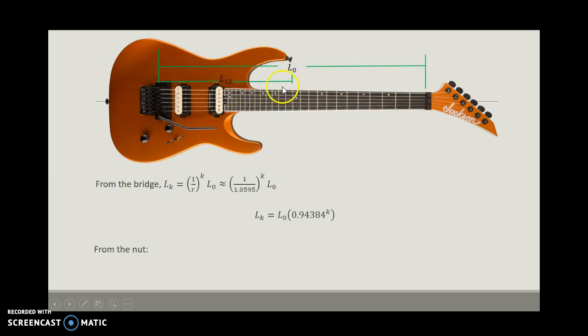Well, what is this distance here? What is this distance right here, the distance from here to here? Well, if this long distance is L0, and this short distance is L12, then this must be L0 minus L12.